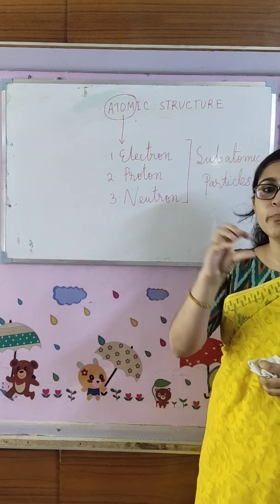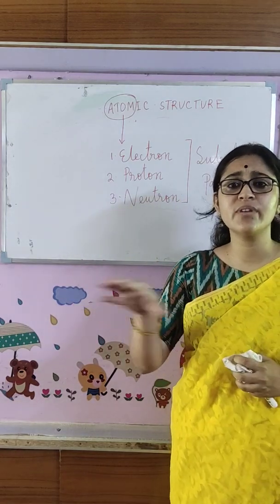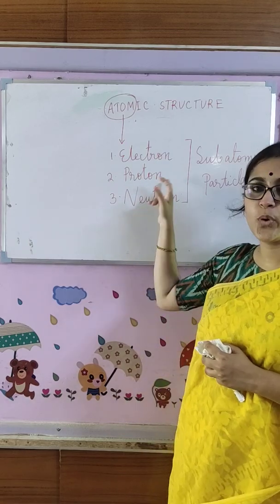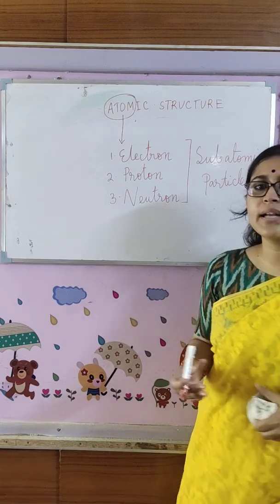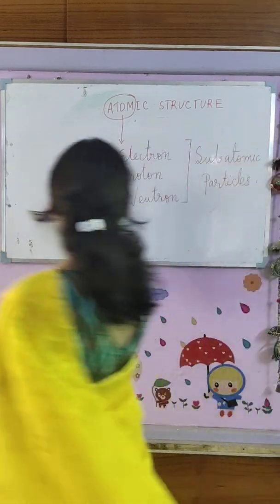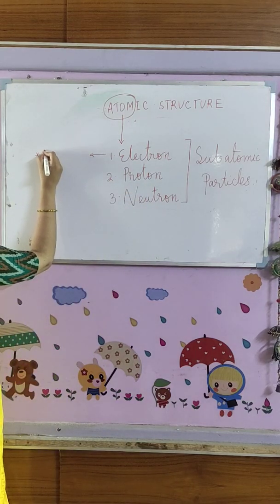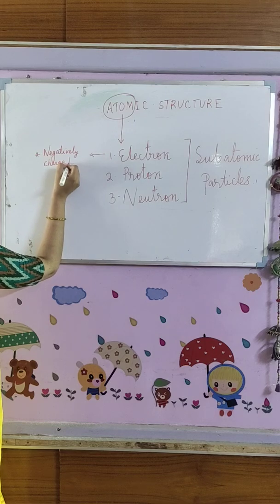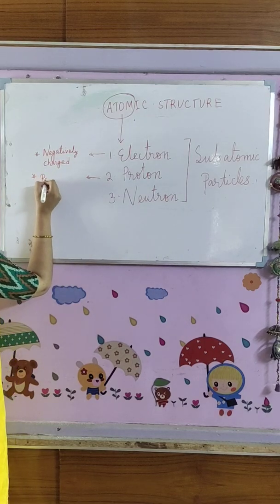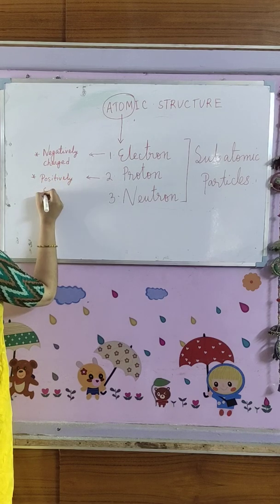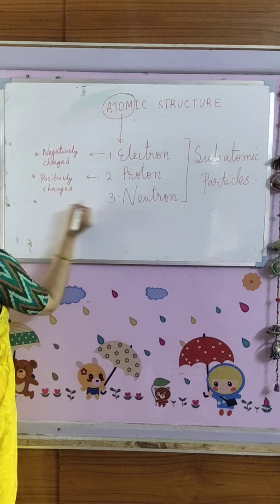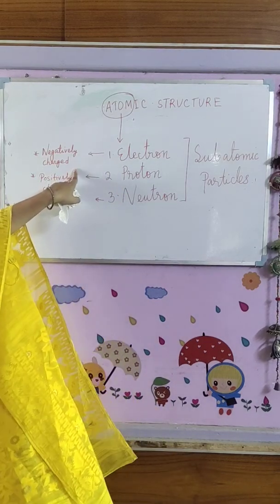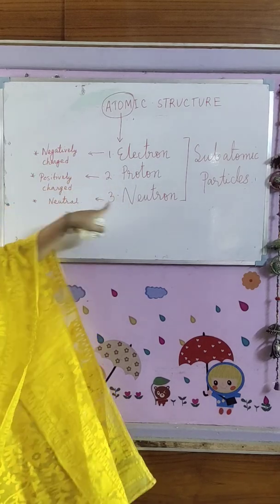As we have to focus on the important parts of this chapter, I am skipping the discovery of electron, proton, and neutron. Instead, we just want to know that inside the atom we have three sub-atomic particles: electron, proton, and neutron. The first one, electron, is a negatively charged particle. Proton is a positively charged particle. And neutron is a neutral particle — that is, it doesn't have any charge, positive or negative. So electron is negatively charged, proton is positively charged, and neutron is neutral.